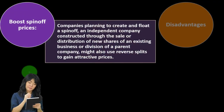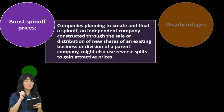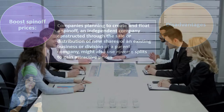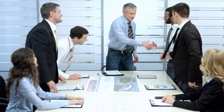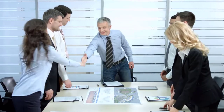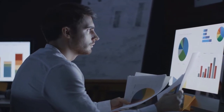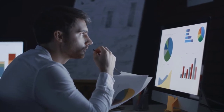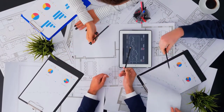A fourth advantage is boosting spinoff prices. Companies planning to create and float a spinoff — an independent company structured through the sale or distribution of new shares of an existing business or division — might use reverse splits to gain attractive prices. The thinking behind spinoffs relates to the trend of conglomerates: a long-held belief that bigger was better and good management could manage anything. Later, companies realized not everything benefits from economies of scale, so large conglomerates began spinning off divisions outside their specialty area.